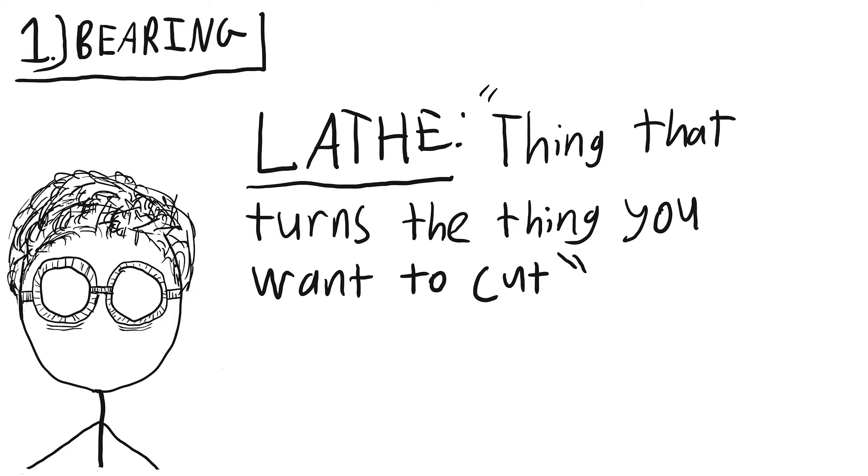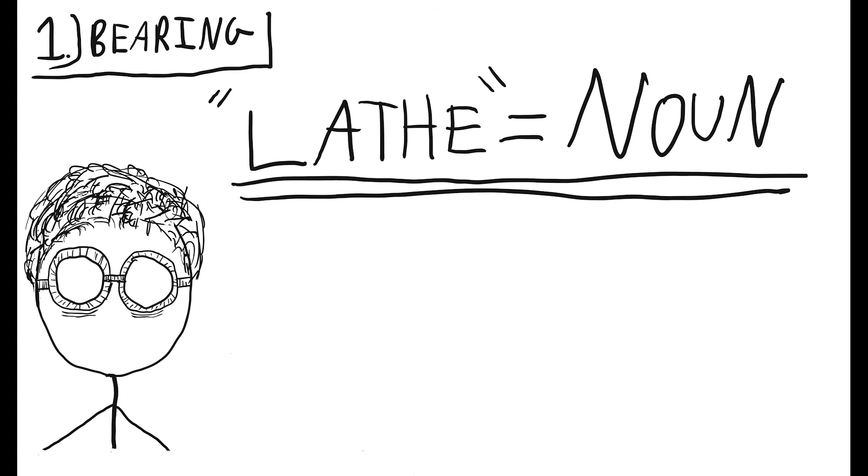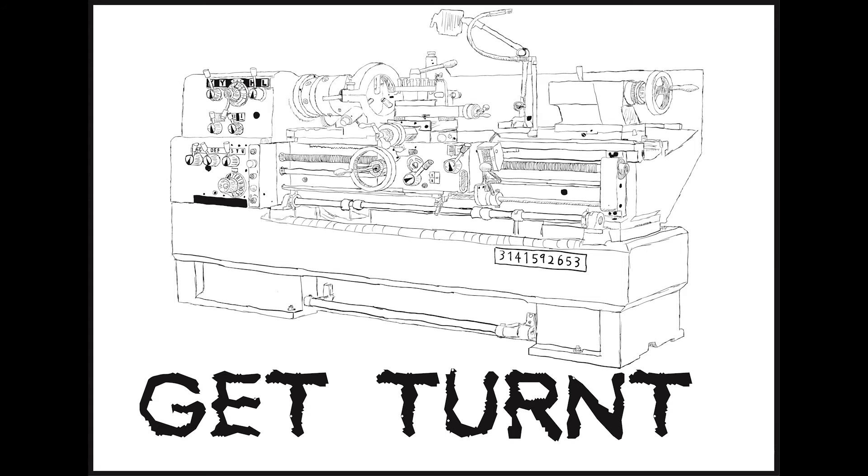And second of all, you should know that the majority of lathes which you want to be using to make your yoyo should be precise to at least 2 ten-thousandths of an inch, or 0.0002 inches. And finally, just for the record, lathe is not a verb. You turn something on a lathe.